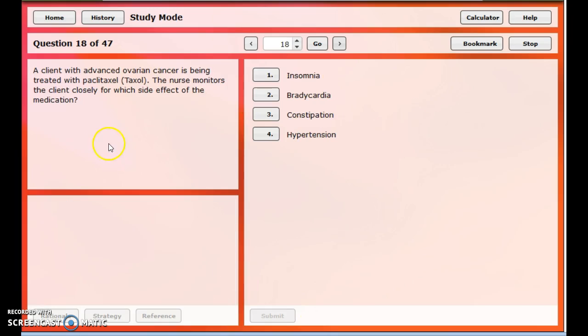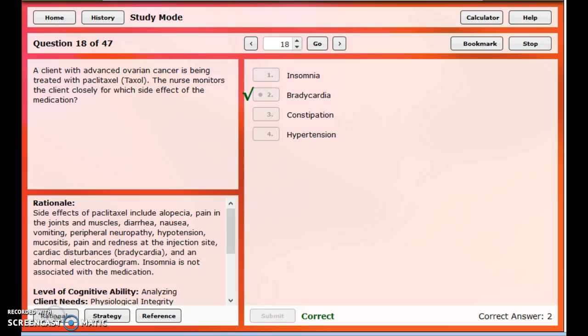The next question is also about a taxane, paclitaxel. Nurse monitors the client closely for which side effect of the medicine. Insomnia, we didn't talk about that. Bradycardia. Yeah, we did talk about that some. That results, low heart rate, low blood pressure can result when someone's having that hypersensitivity reaction. Constipation, we didn't go into. And hypertension, no, we said hypotension, low blood pressure, is what's going to result when someone's having that hypersensitivity type reaction. Here it gives you a little bit better explanation.